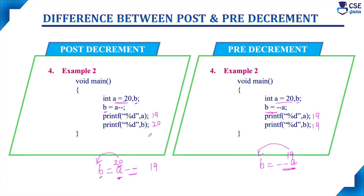So now we find the exact difference between post decrement and pre decrement. Simply using both operators alone, we won't find any difference. The difference is visible when assigning the variable value to another variable. In post decrement, the operand is placed first, so the operand value is used and assigned to the left-hand side variable first, then the variable gets decremented by 1. In pre decrement, the operator is placed first, so the variable gets decremented by 1 first, and that decremented value is assigned to the left-hand side variable.